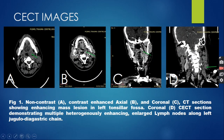These are the CT images. In this axial section and coronal section, we can see a heterogeneously enhancing mass lesion in the left tonsillar fossa. In this coronal section, we can see multiple lymph nodes along the left jugulodigastric chain.